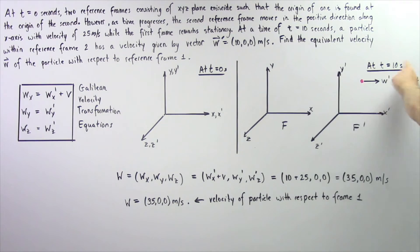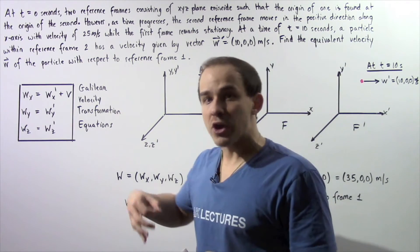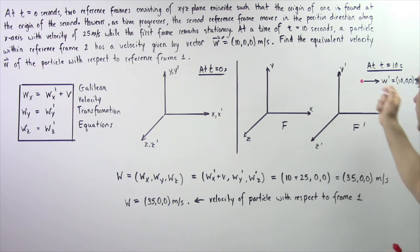So we basically want to use this result and these equations to transform this velocity to the velocity of the particle with respect to reference frame one given by f.